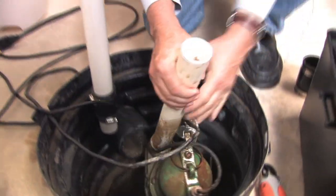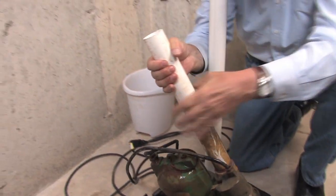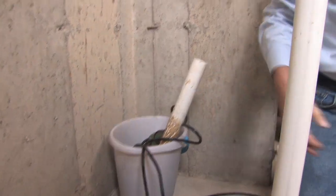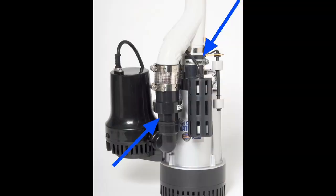Now unplug the AC pump and remove it from the sump pit. If there's a check valve on the discharge pipe of the existing system, remove it slowly. There will be water in the pipe above the valve. The Basement Watchdog system has two built-in check valves so you won't need any additional check valves.